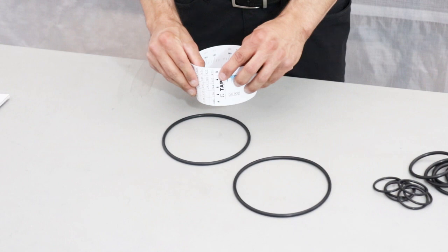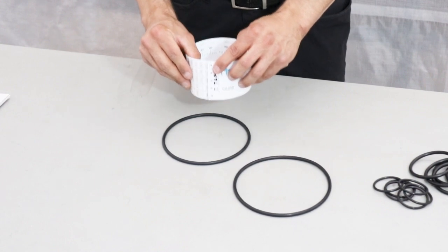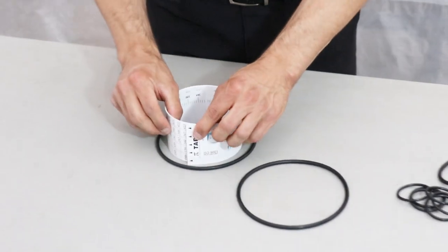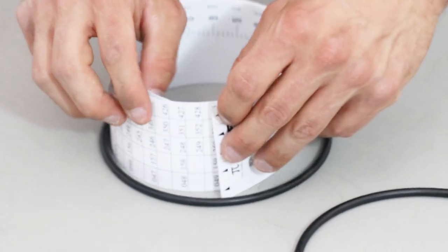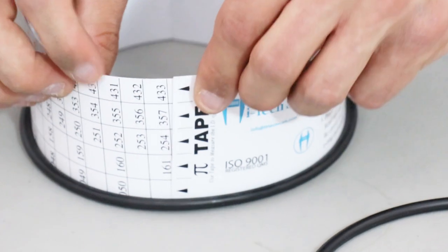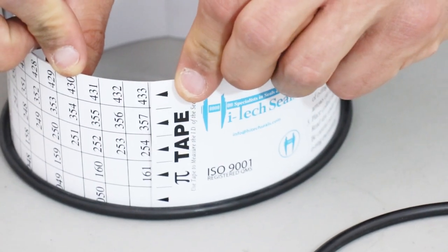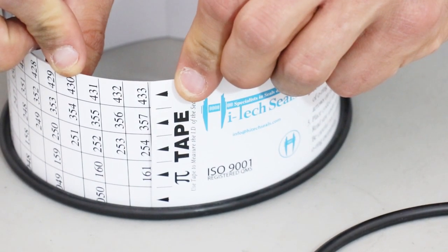Have the o-ring type that you're measuring facing outwards. In this instance, we're measuring an AS568 o-ring. Coil the tape with the arrows on the outside of the coil and place it inside the o-ring. Unwind the tape inside the o-ring and expand firmly. Read the sizes under the appropriate cross section arrow.